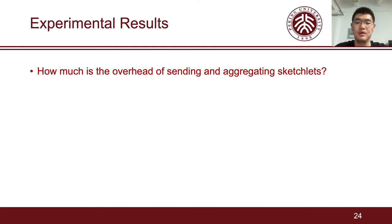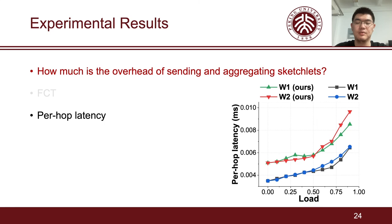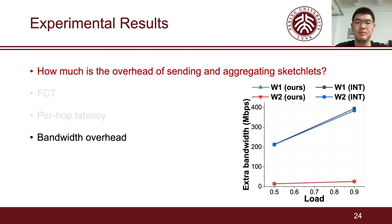The third issue is how much is the overhead of sending and aggregating sketchlets. The results show that Light Guardian has little impact on FCT and latency. And the total bandwidth capacity of the network increases only 0.07% after the deployment of Light Guardian.